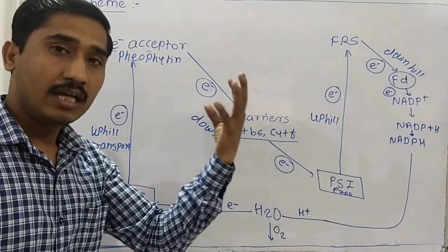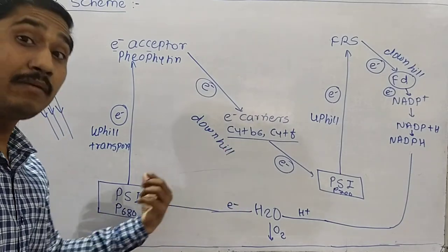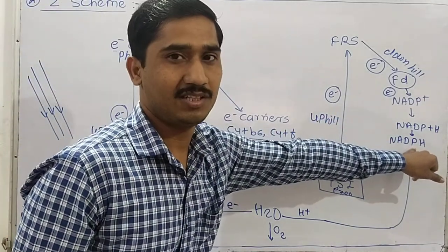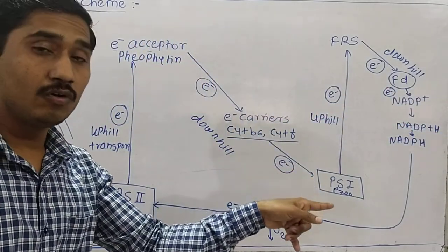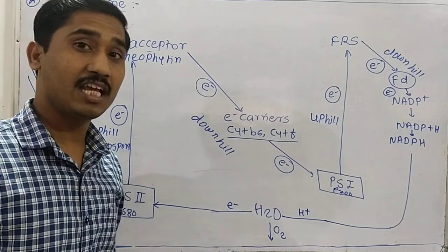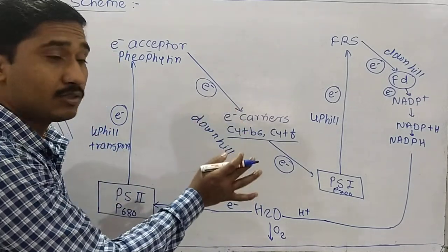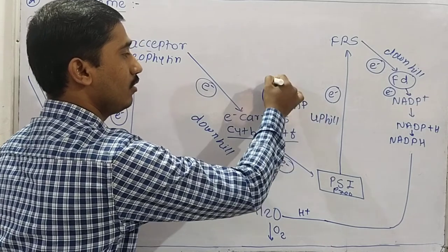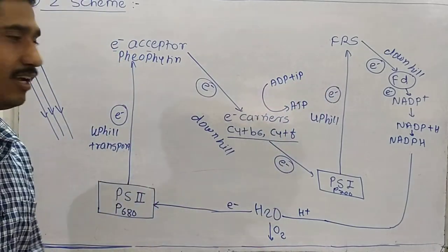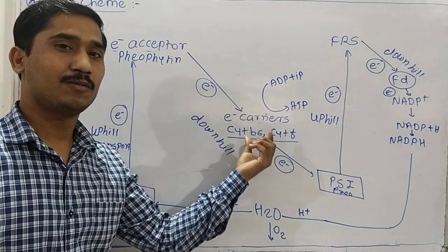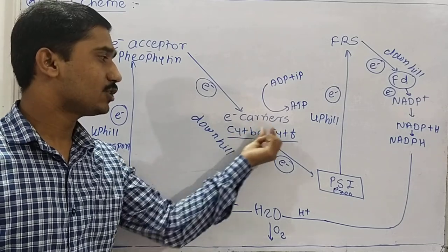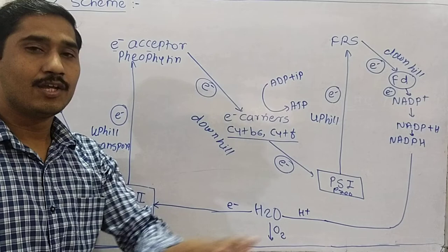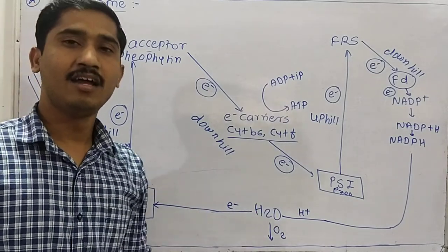PS I gains its electron from PS II, and PS II gains its electron from the water molecule. Additionally, during this electron flow, ATP molecules are also synthesized. ATP is formed from ADP + inorganic phosphate when electrons are transported through the electron carriers — specifically from cytochrome b6 to f, and from ferredoxin to b6 — in both cyclic and non-cyclic photophosphorylation.